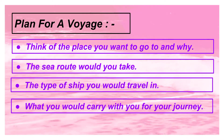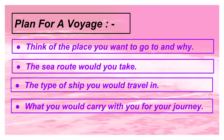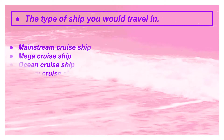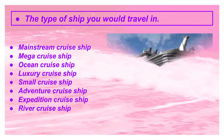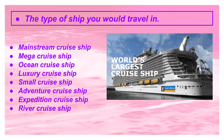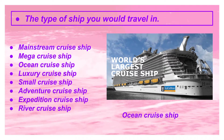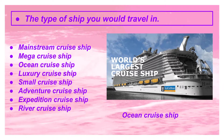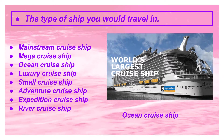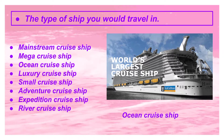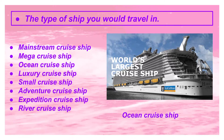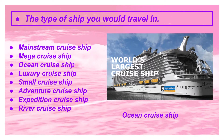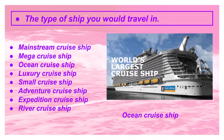I will tell you about different types of sea routes and types of ships. The types of ships include mainstream cruise ship, mega cruise ship, ocean cruise ship, small cruise ship, luxury cruise ship, adventure cruise ship, expedition cruise ship, and river cruise ship. One of them is shown on your screen — that is the ocean cruise ship, which is the world's largest cruise ship.